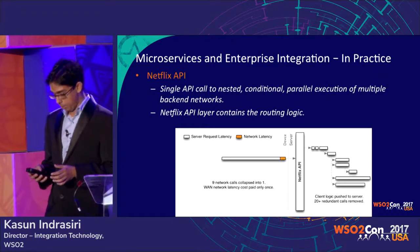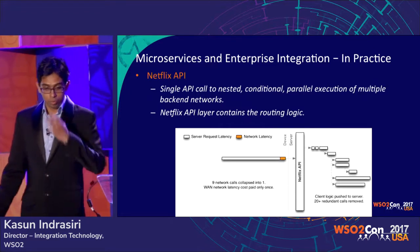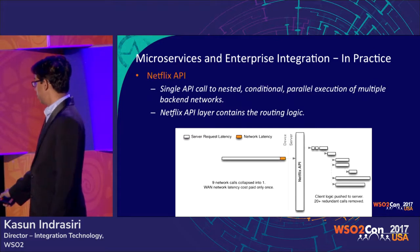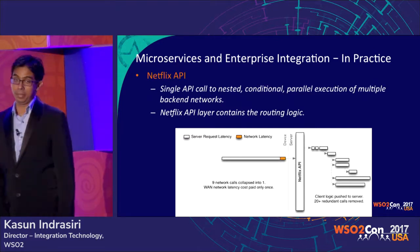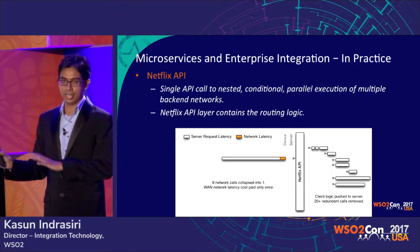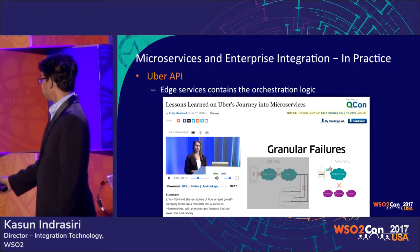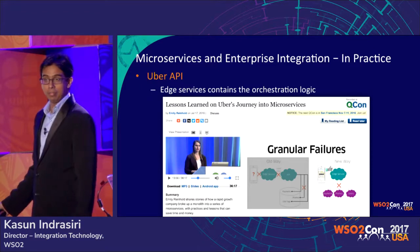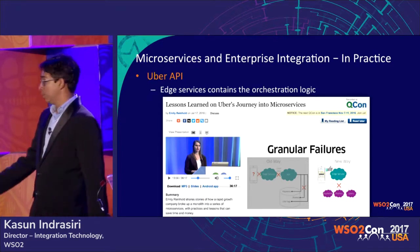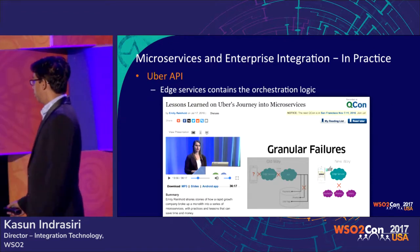Going back to the Netflix use case: for a single API call, orchestration happens. What they did is implement the orchestration logic at the API gateway layer — orchestration between nine services implemented at the gateway. That is not a smart endpoint. Similarly, Uber had a monolithic system, split it into three services, and implemented orchestration logic at edge services — very similar to an API gateway. The orchestration logic is implemented at that layer, not distributed to smart endpoints.